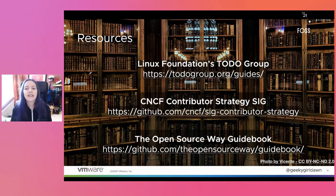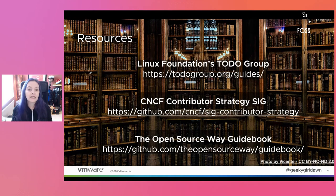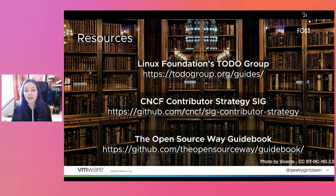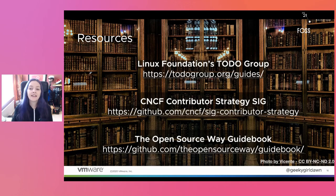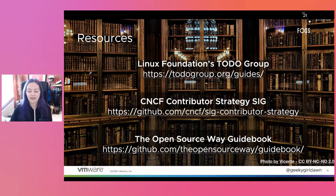Before I wrap up, let me leave you with a few resources. The TODO group has a bunch of guides with great information about creating and managing healthy projects, and many of them talk about various aspects of governance. The CNCF contributor strategy SIG has a governance working group with more details about what you need for governance and some options for leadership selection. The Open Source Way guidebook is a fantastic resource with an entire chapter on governance with loads of details. These are all really great starting places for understanding how to govern your open source project.